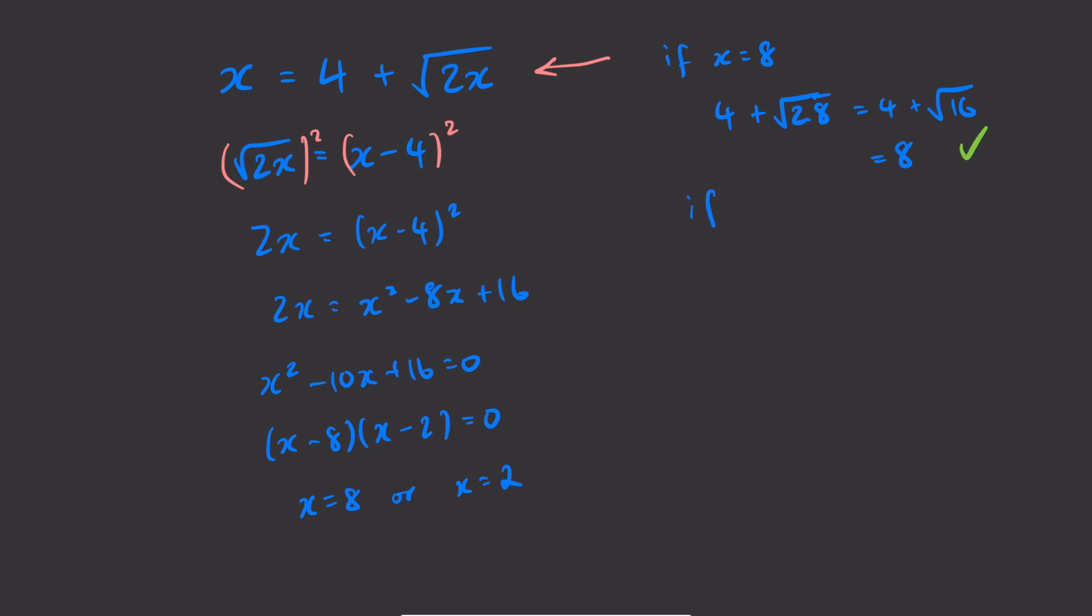Let's check if x equals 2. What do we get on the right hand side? We get 4 plus the square root of 2 times 2, which is equal to 4 plus the square root of 4, which is 6. 4 plus 2. This is not a valid solution. 2 does not equal 6. So what's happened here?